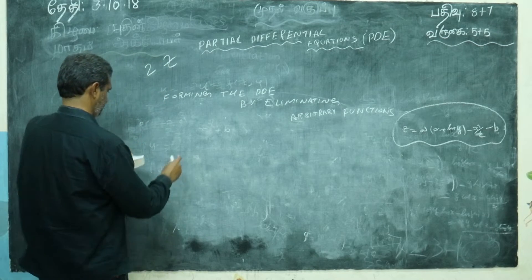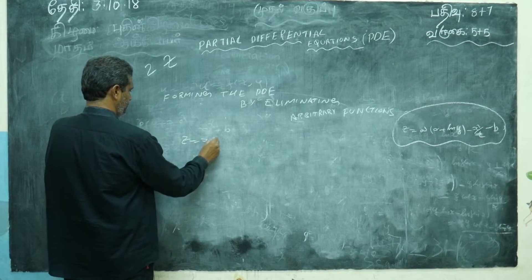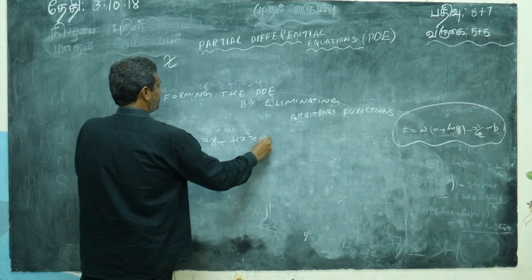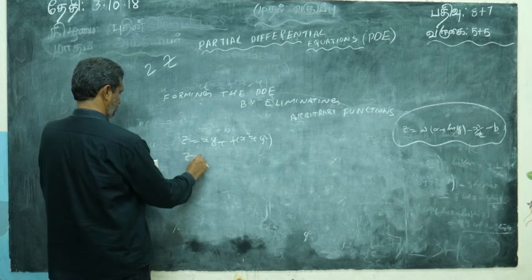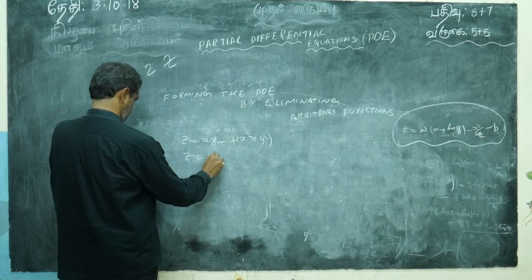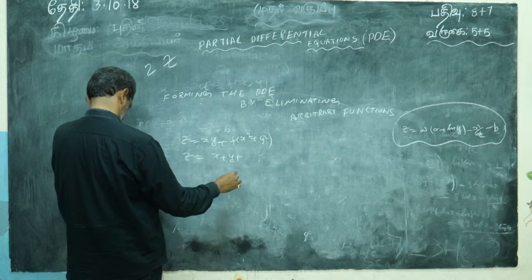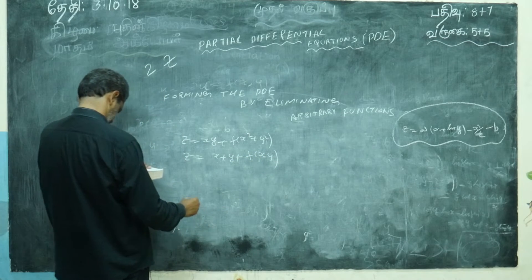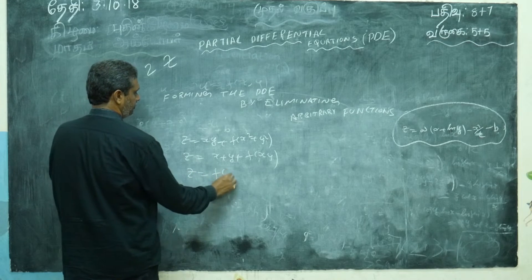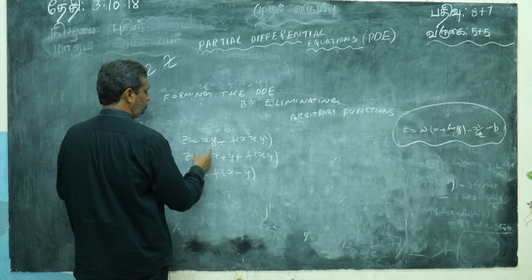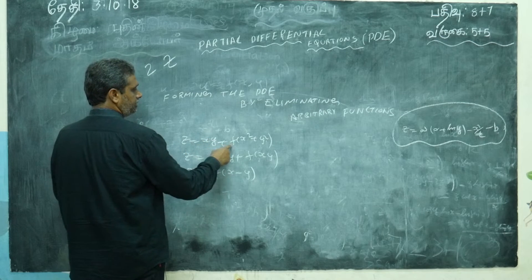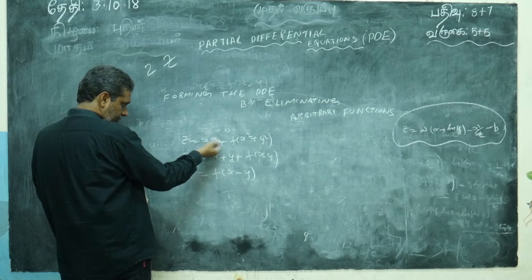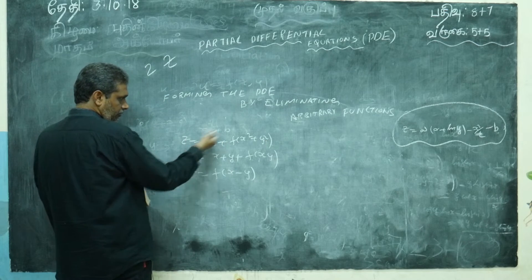With arbitrary functions also you can try these problems. z = xy + f(x² + y²): here p = y + f'(x² + y²)·2x, and similarly q = x + f'(x² + y²)·2y. Then compute p − qx and q − py, and divide — you will get the answer. For z = f(x − y), the same story applies.